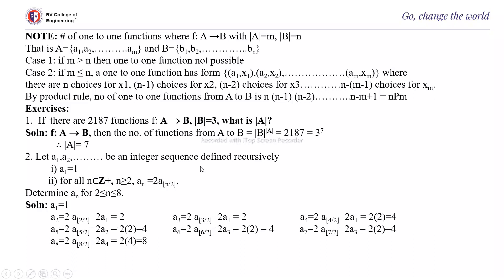Next, let a1, a2, … be an integer sequence defined recursively by a1 = 1, and for all n in Z+, a_n = 2·a⌊n/2⌋. Determine a_n for n from 2 to 8. We have a1 = 1, a2 = 2·a(2/2) = 2·a1 = 2, and likewise you can generate the remaining sequence values up to a8.